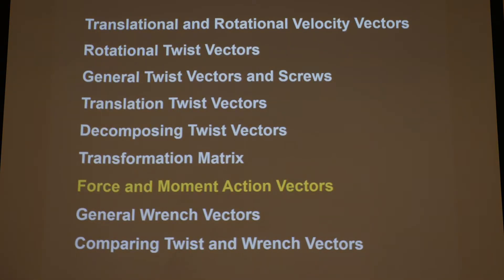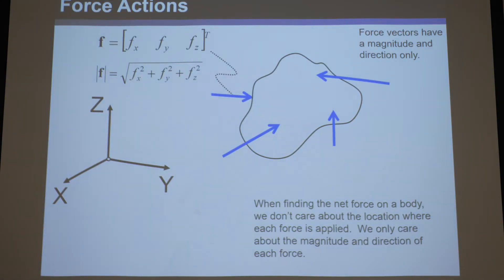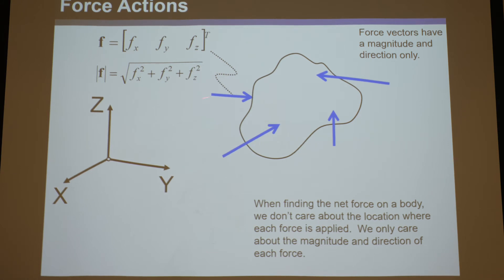Now we move on to forces and moments — loads. They're completely analogous to what we've been doing with velocities. Just as there are translation vectors that are three-by-one with x, y, z components, force vectors are defined with respect to a coordinate system, are three-by-one vectors with components Fx, Fy, Fz, and their magnitude is the square root of the sum of squares of their components. If you have multiple forces on a potato-like body, the force vector tells you direction and magnitude but contains no information about where the force is applied.